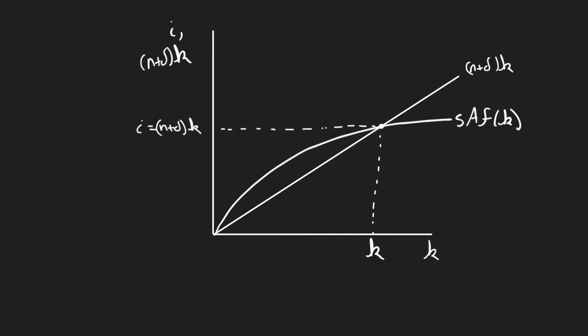So we start here with our Solow model in steady state. And the way we know this is in steady state is that it's where these two lines are crossing.